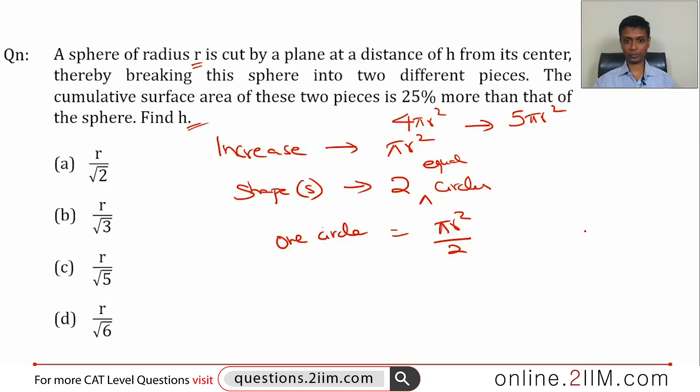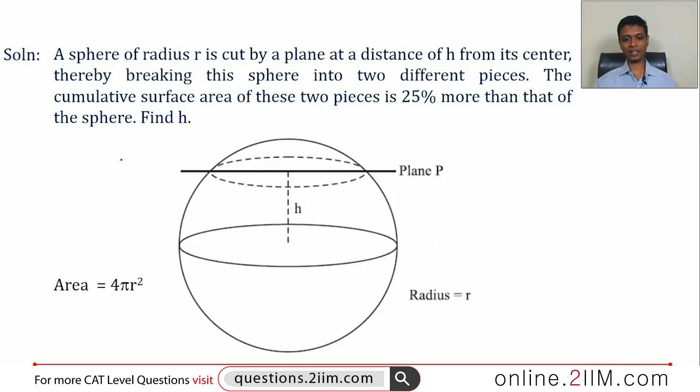So you cut this off by a plane, this radius is r, this h is what we need to find. Assume this radius of this circle is r₁. Now we know area of this circle, area is πr² by 2.